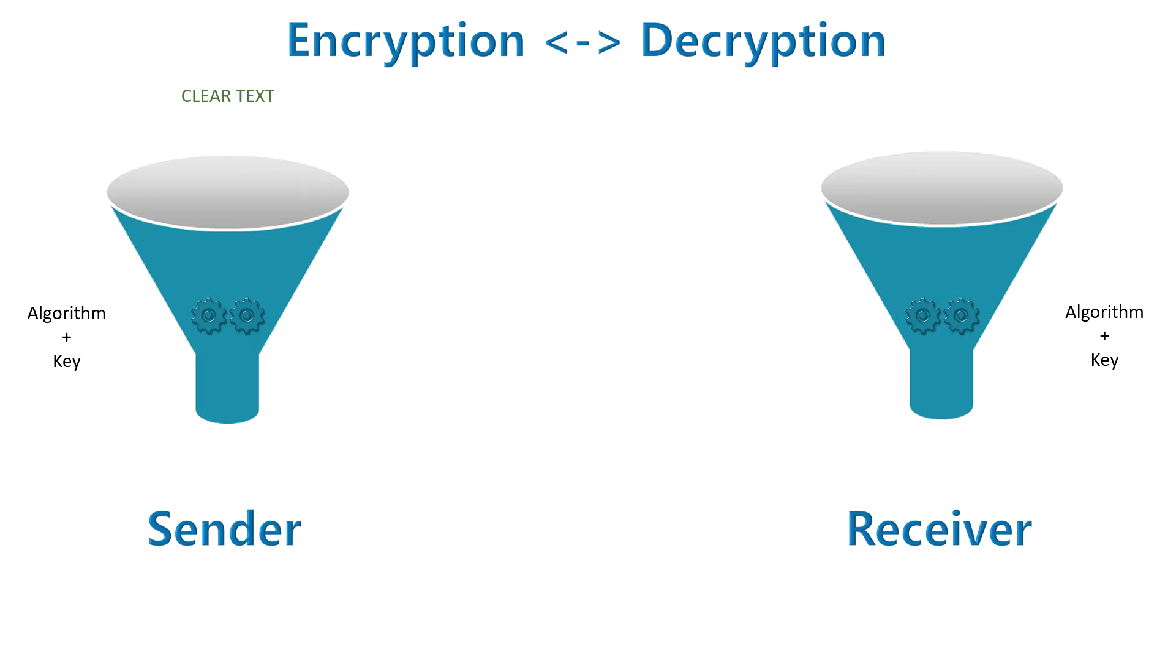On sender side, it has data in clear text format and it is sent to the encryption engine where algorithm and key is applied. Clear text is converted to the cipher text and sent to the peer. Receiver does process this cipher text to its engine. It does apply same algorithm and key and decrypt from cipher text to the clear text.